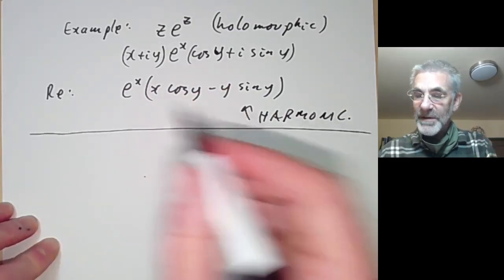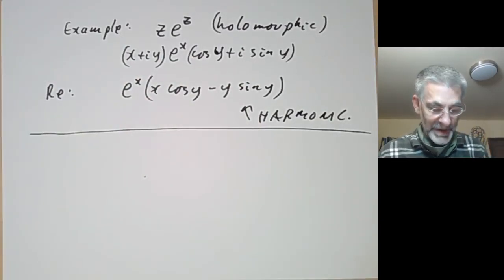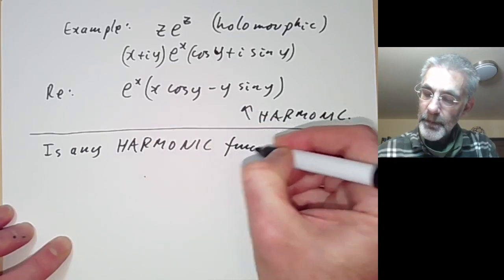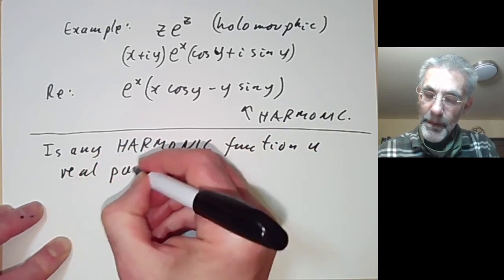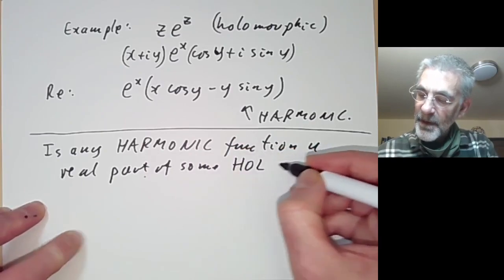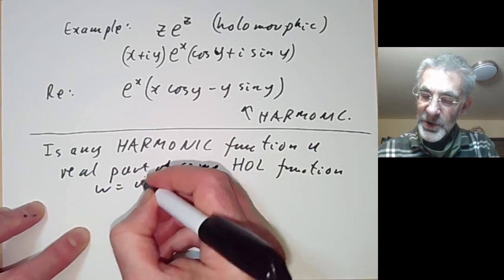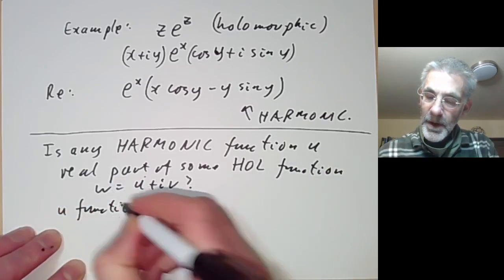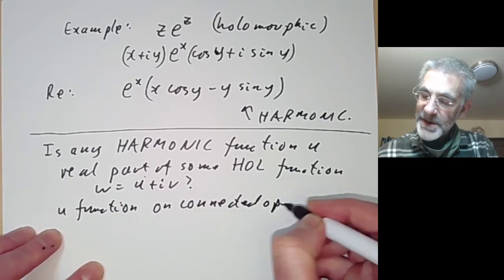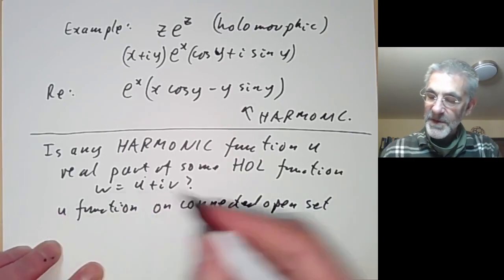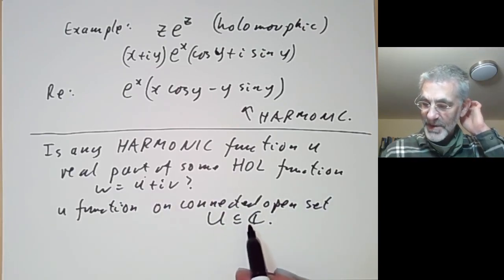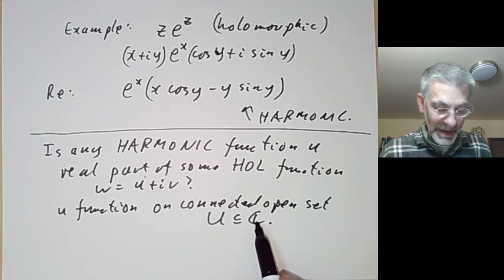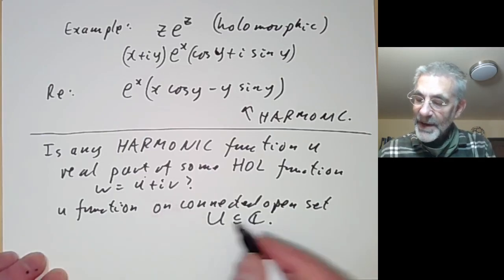We've shown that the real part of any holomorphic function must be harmonic. So let's ask the converse: is any harmonic function u the real part of some holomorphic function w = u + iv? It's useful to take u to be a function on a connected open set — I'll use a capital U — because we often want to study functions not defined on all of ℂ. The answer depends on what U is.